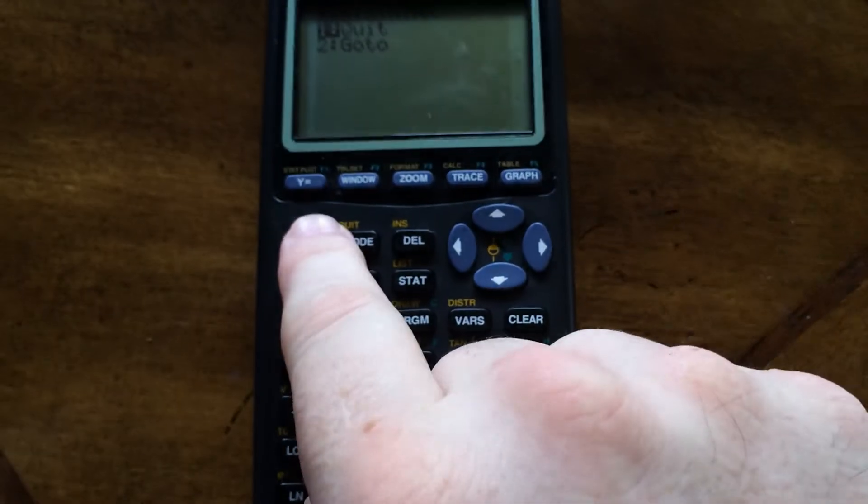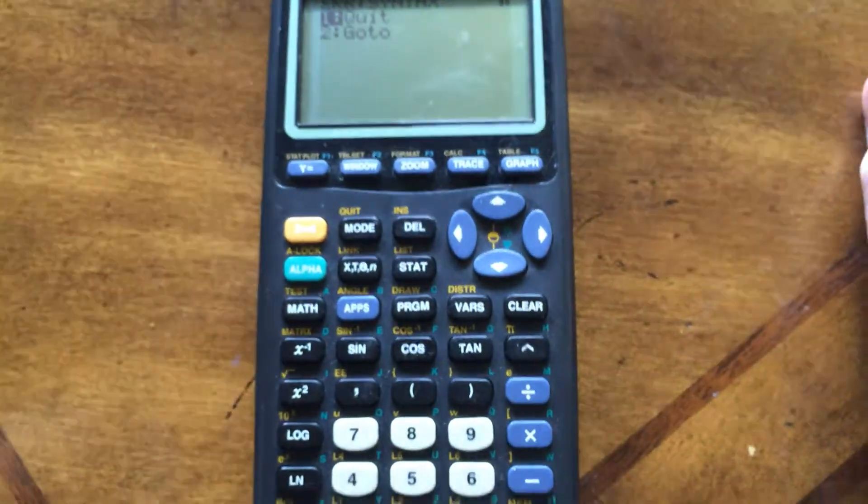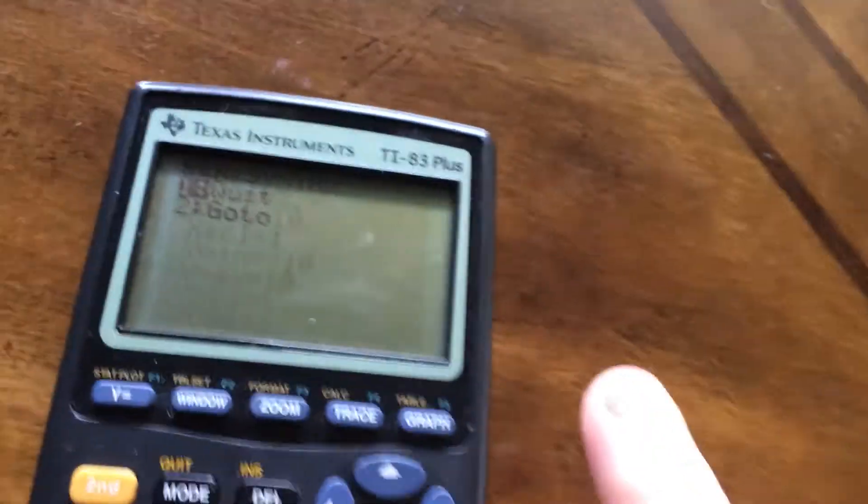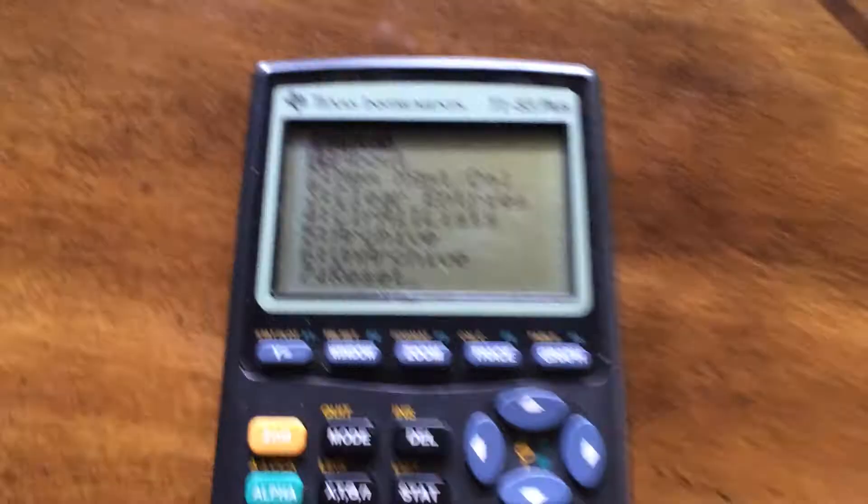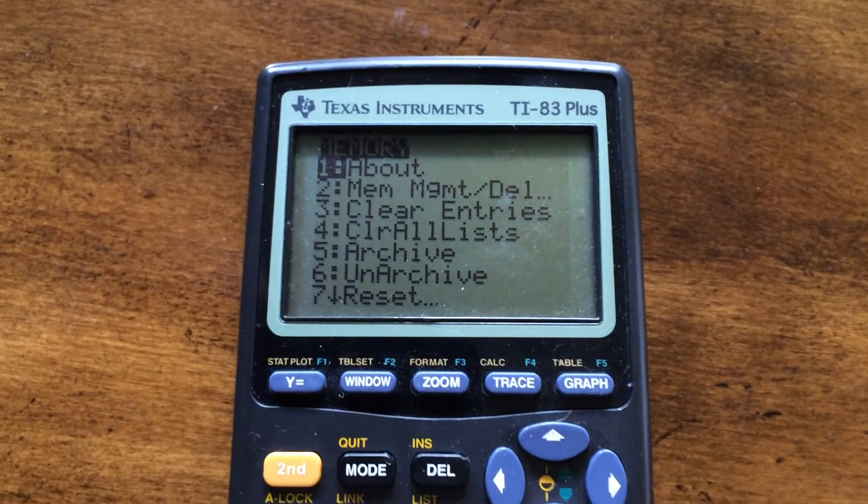First thing you do is just hit the second button right here. And then you hit the plus sign. Hit the second button and then the plus sign. And you're going to get to this screen right here that says memory.